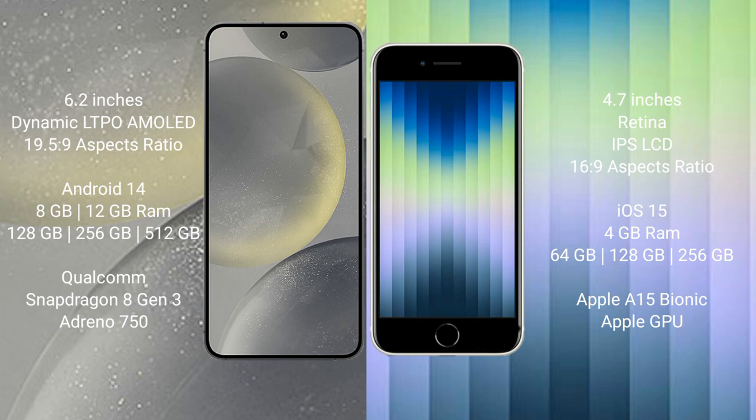The Samsung Galaxy S24 comes with 8GB or 12GB RAM, with 128GB, 256GB, or 512GB internal storage, a Qualcomm Snapdragon 8 Gen 3 processor, and Adreno 750 GPU. The iPhone SE comes with 4GB RAM and 64GB, 128GB, or 256GB internal storage, an Apple A15 Bionic processor, and Apple Graphics GPU.